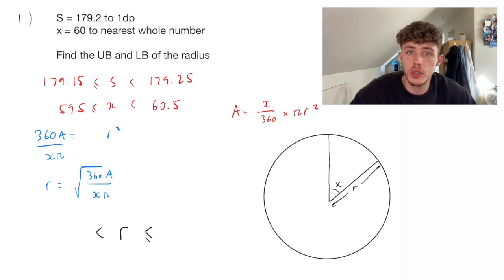This is because when you do a division, you want the biggest number divided by the smallest number to get the biggest outcome. So I'm going to pop this into my calculator. And where s here is representing the area of the sector, I've used the 179.25 value there and the lower bound of the x or the 59.5.